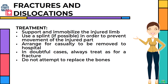The following are the treatment for fractures and dislocations: support and immobilize the injured limb; use a splint if possible in order to prevent movement of the injured part; arrange for casualty to be removed to hospital; in doubtful cases always treat as for fracture; and do not attempt to replace the bones.